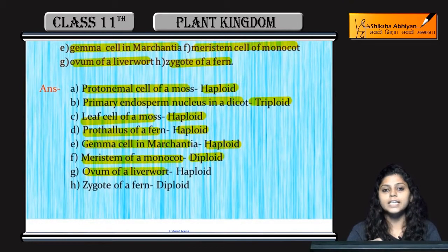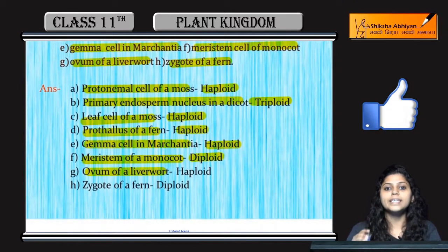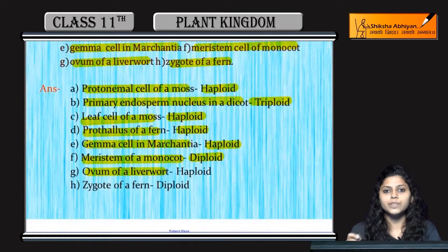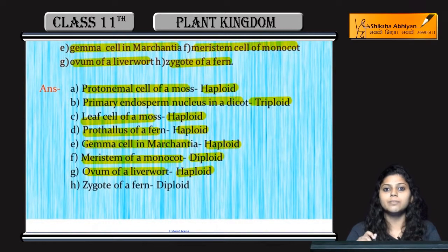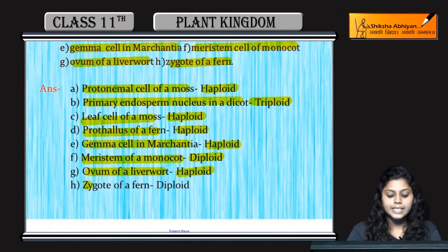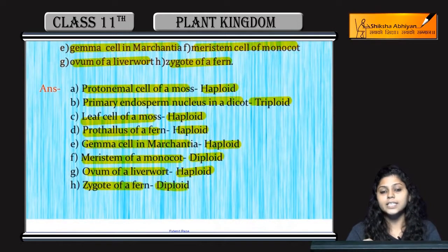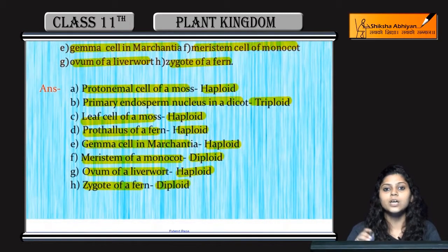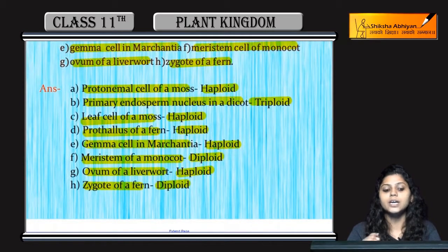Ovum of a liverwort — ovum is gametophyte. The male gamete and female gamete are haploid, because they undergo reduction division; they are gametophyte. Zygote of fern is diploid — zygote is the fusion of two gametes; gametes are haploid and the zygote is diploid.